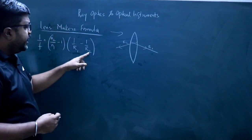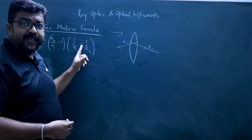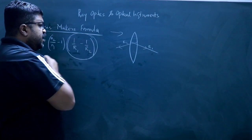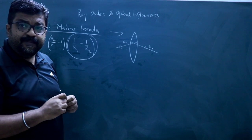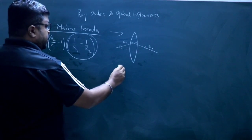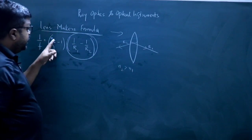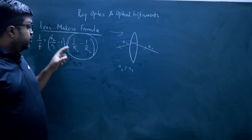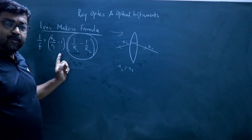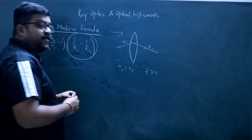If R2 is negative, then there is already a minus sign in the formula, so the whole quantity (1/R1 − 1/R2) will be positive. If N2 is greater than N1, then the quantity (N2/N1 − 1) will also be positive. So overall this quantity is positive, and therefore the focal length is positive.